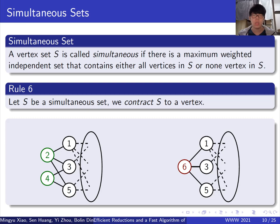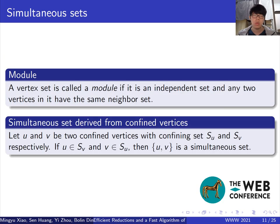Rule 6 contracts a simultaneous set as a fake vertex. For set S, if there is a maximum weighted independent set that contains either all vertices in S or no vertices in S, then the set S is simultaneous. We have two kinds of simultaneous sets.